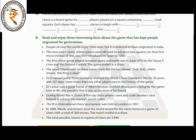It was called Shatranj in Persia. Checkmate in chess comes from the Persian phrase 'shock mat.' We call it checkmate and they call it shock mat. All these interesting facts are given below — read them for yourself and enjoy.